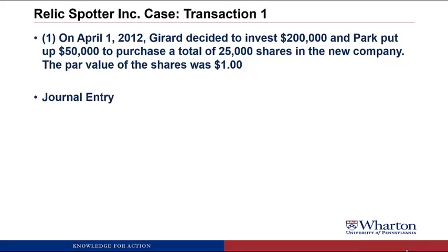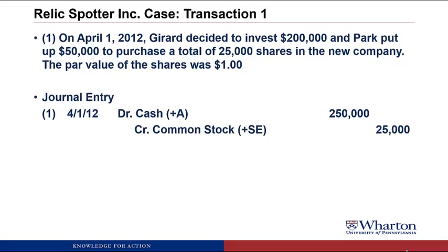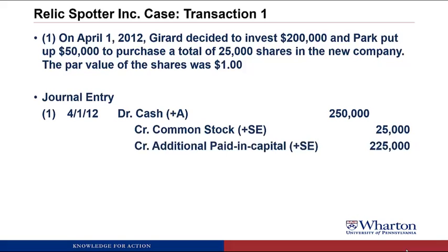In this transaction, we're receiving $250,000 of cash for issuing equity. Cash is increasing by $250,000 — cash is an asset, and we increase assets through debits, so we debit cash for $250,000. We also have a $250,000 increase in contributed capital, which is stockholders' equity. We have to split this into two parts: common stock at par, which is 25,000 shares times $1, equals $25,000 — we credit common stock for $25,000. Then we credit additional paid-in capital for the remainder, $225,000, so that our debits equal our credits.